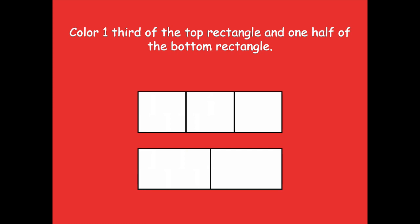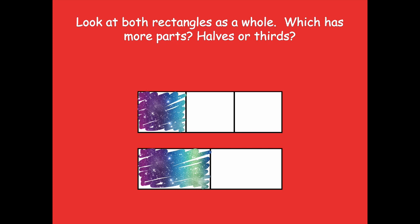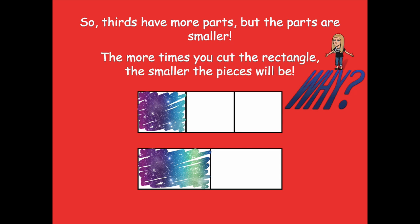Here is what we should have — one third shaded and one half shaded. Let's look at both rectangles as a whole. Which has more parts — halves or thirds? Yeah, thirds does, right? Because there are three parts, and that's more than two in our halves. So thirds have more parts but the parts are smaller. Why? Because the more times you cut the rectangle, the smaller the pieces will be. So even though the number gets bigger when you're partitioning, your parts actually get smaller. Think about sharing a pizza — if you and one friend shared it you'd get so much more pizza than if you and five friends shared it, because the pieces would have to be smaller with more people.